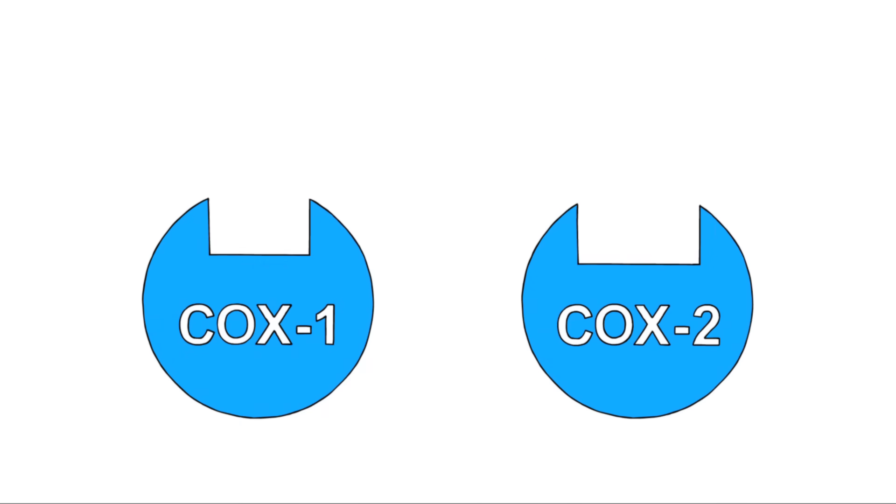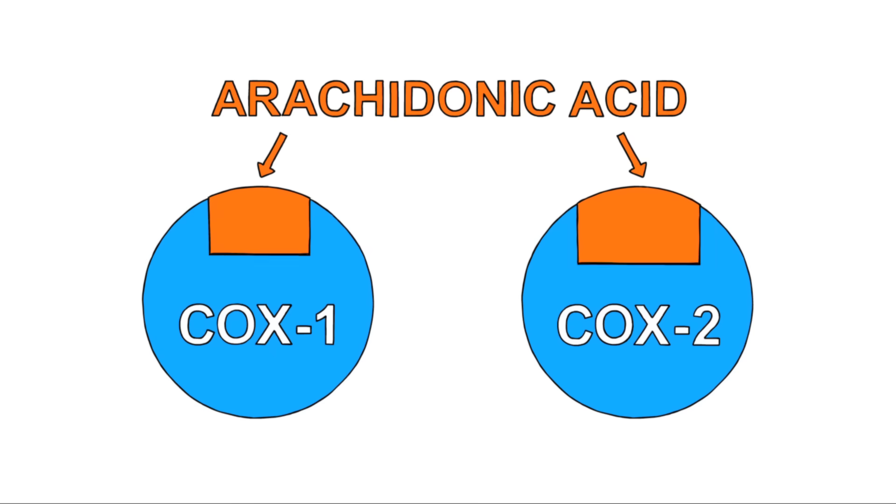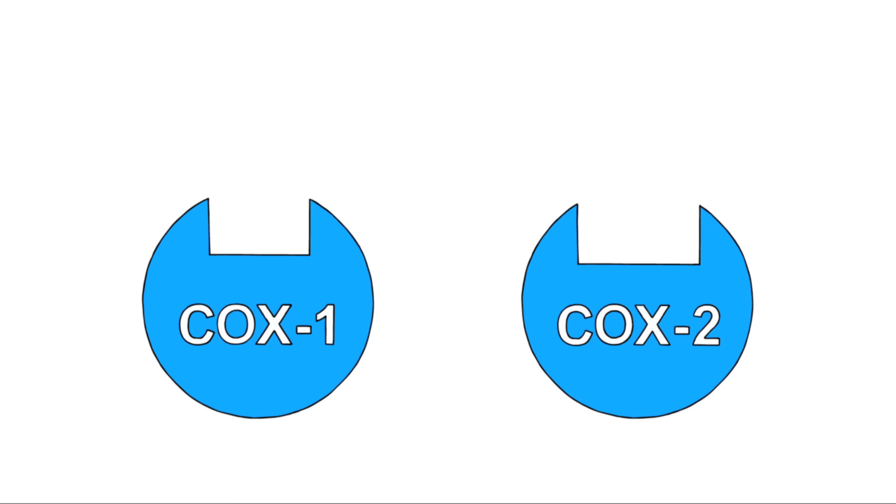Now, all enzymes have an active site. That's the place in the enzyme where the reaction happens. The active sites of COX-1 and COX-2 fit arachidonic acid very cozily. As you can see, there's no room to spare. Now, it's in this active site that aspirin and ibuprofen do their work.